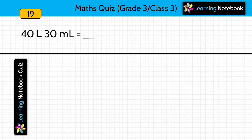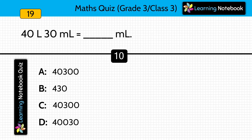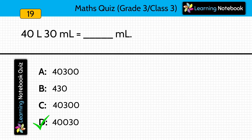Question eighteen: 40 liters 30 milliliters equals how many milliliters? You have to convert liters and milliliters into milliliters. Answer is 40,030, because 1 liter equals 1,000 milliliters, so 40 liters equals 40,000 milliliters, and adding 30 gives 40,030.